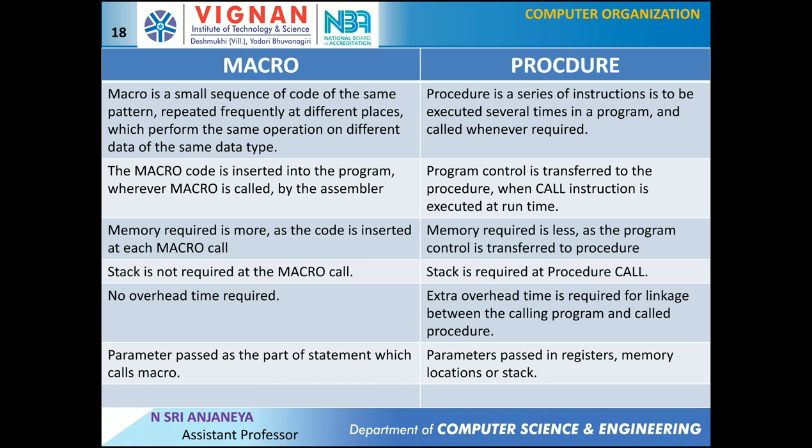Stack is used in procedures to store the return addresses, since there is a control transfer to the beginning of the procedure. No overhead time is required for macros because there is no control transfer. For procedures, extra overhead time is required for linkage between the calling program and the called procedure. For parameter passing: in macros, parameters are passed as part of the statement that calls the macro. In procedures, parameters can be passed in multiple ways — using global variables, CPU registers, stack, memory locations, or using public and external keywords.